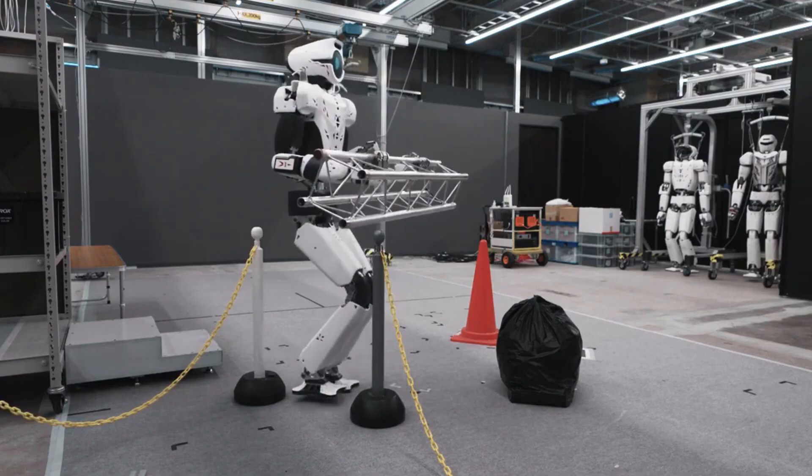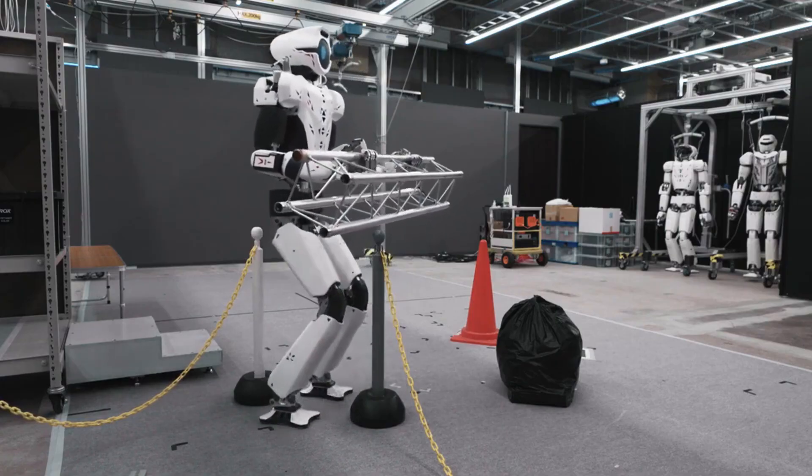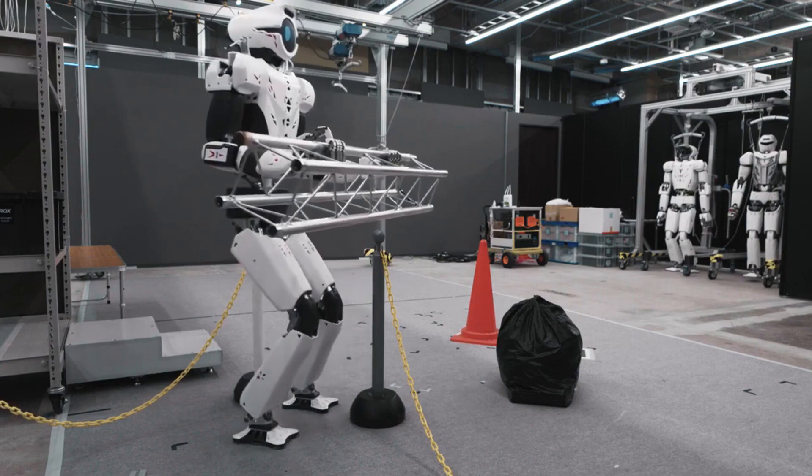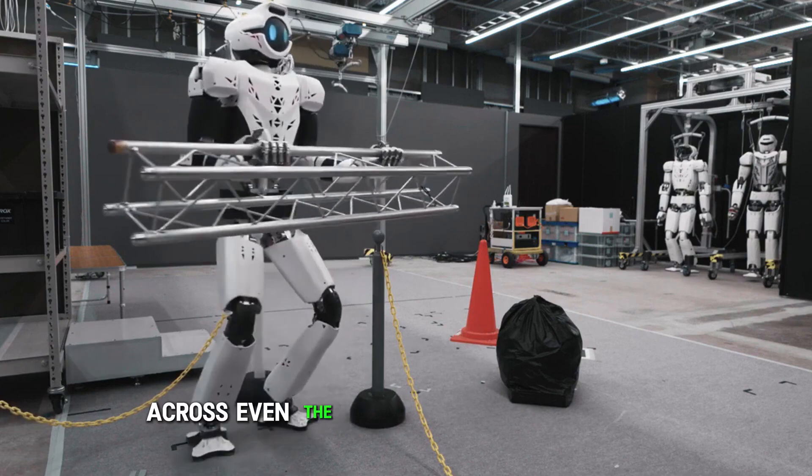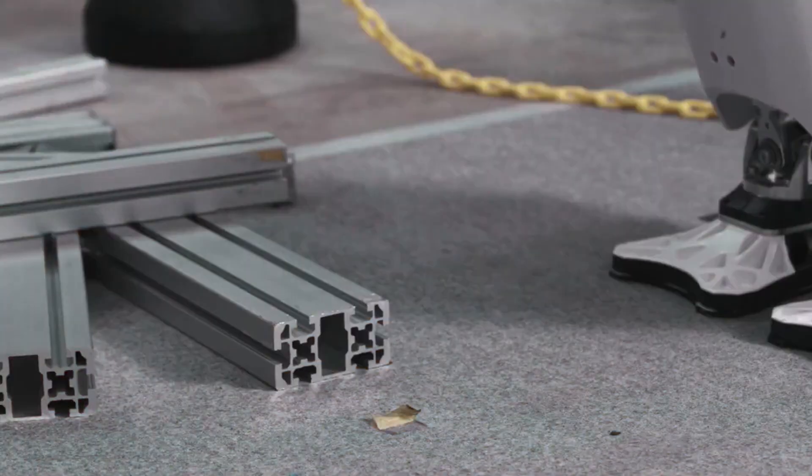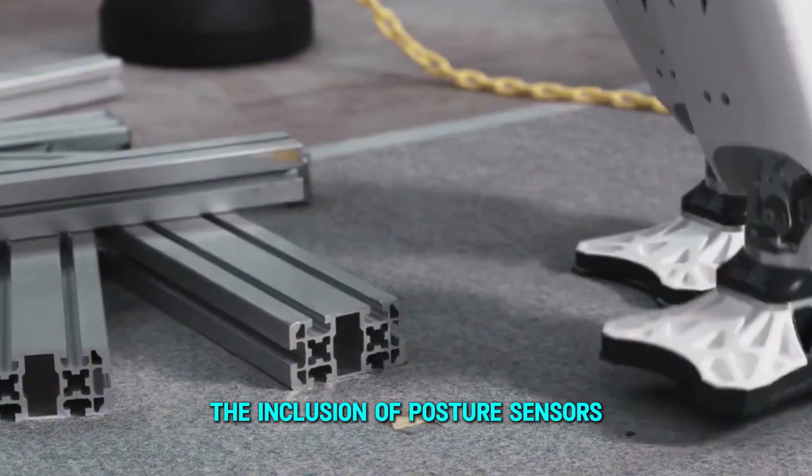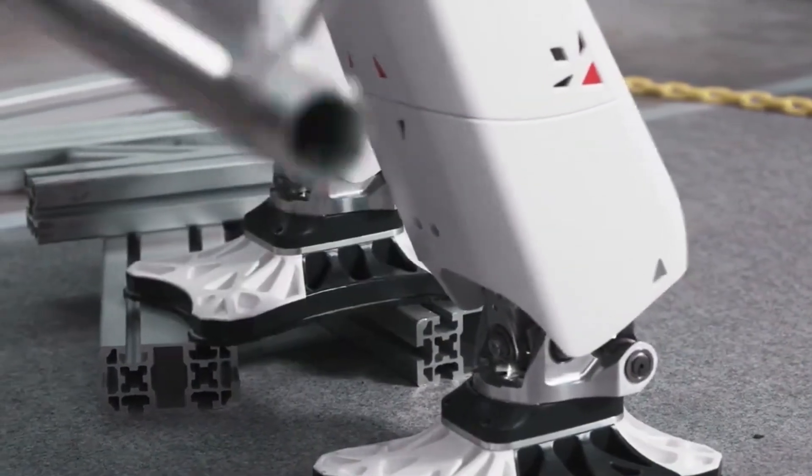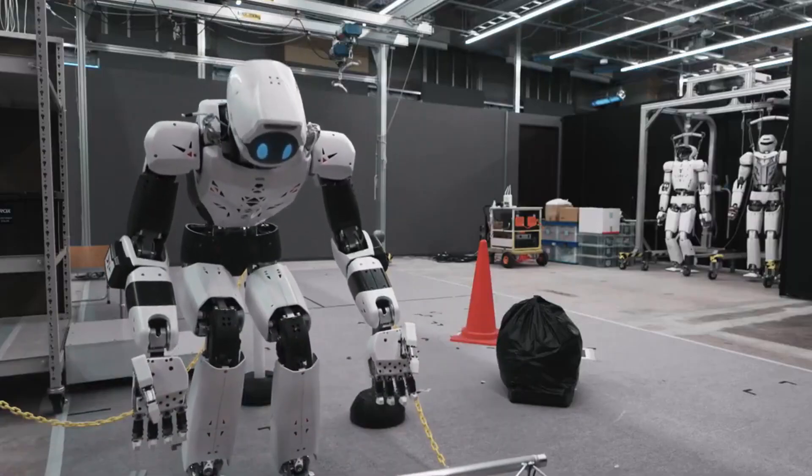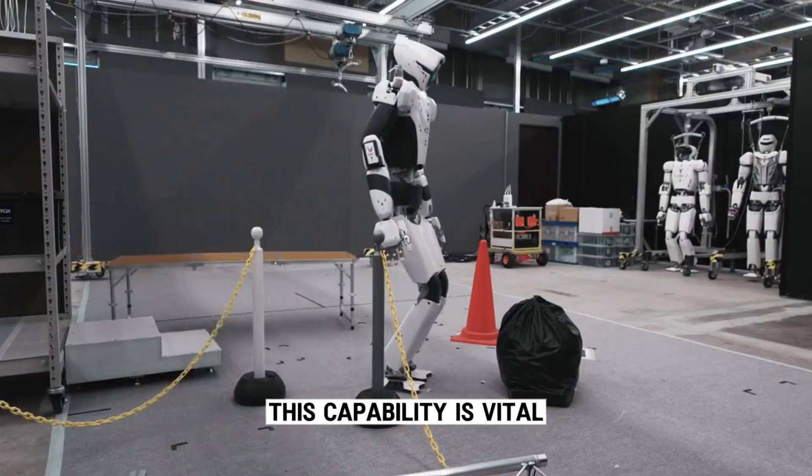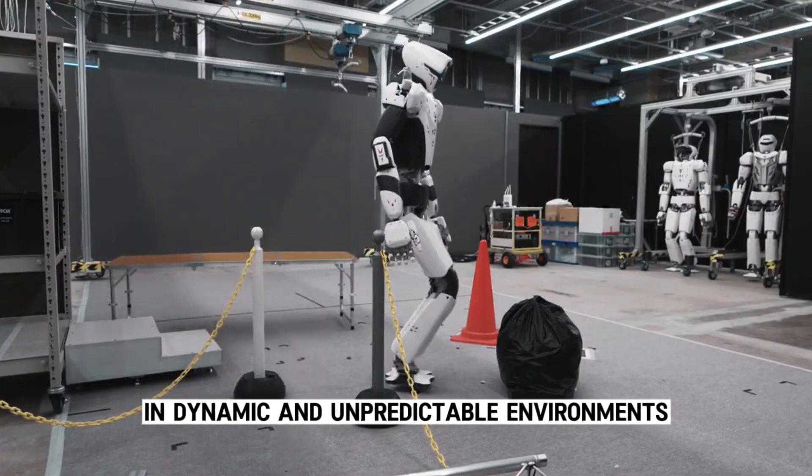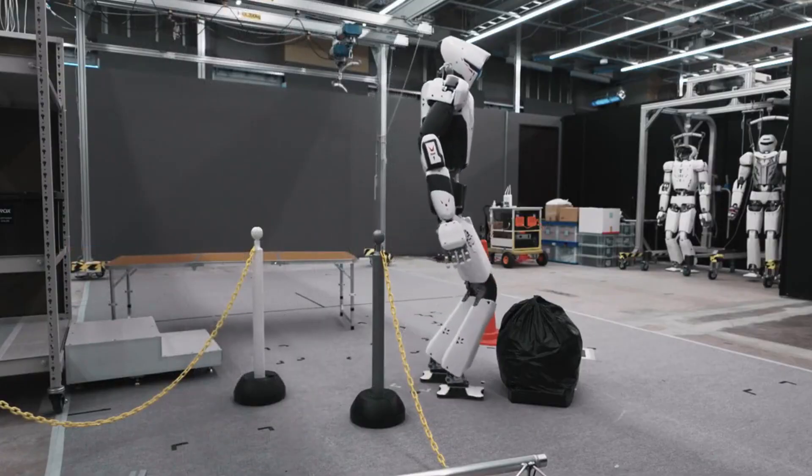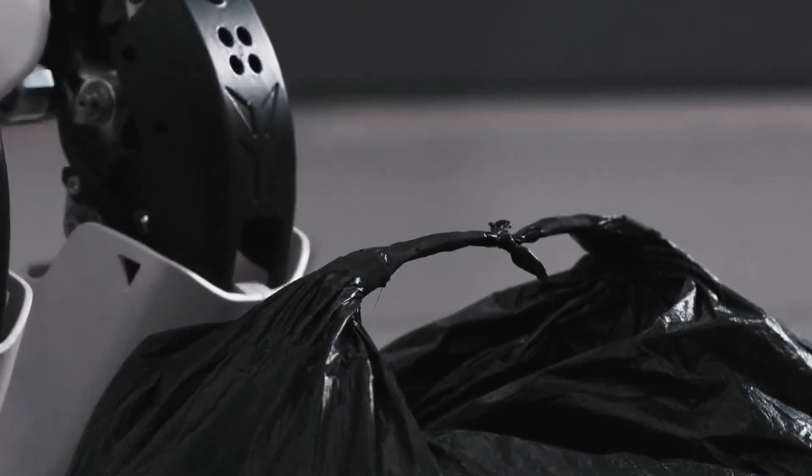This sophisticated system empowers the robot to autonomously adjust its footing in real-time, ensuring stable movement across even the most challenging terrains. The inclusion of posture sensors adds another layer of precision, continuously monitoring the robot's orientation and making adjustments to its movements as necessary.